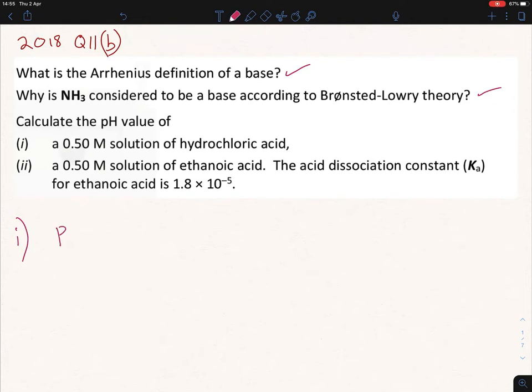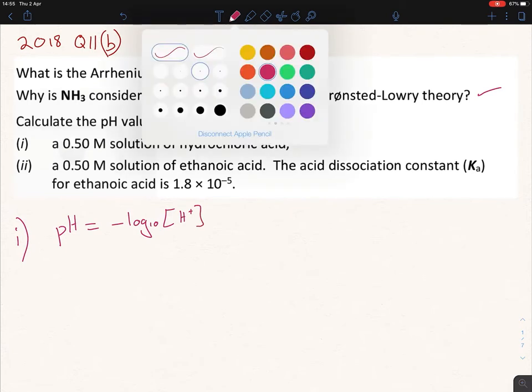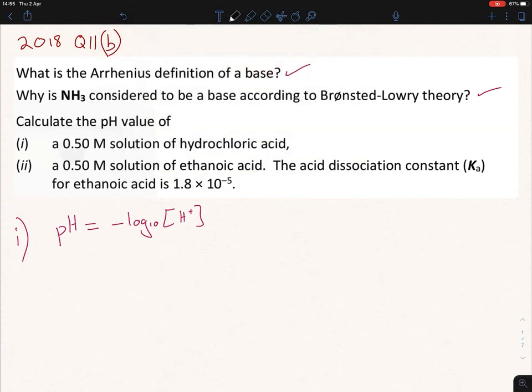So we write out our formula: pH equals minus log to the base 10, and don't forget those square brackets, H+. That's our overall formula there, you must put in those square brackets, otherwise you'll lose marks. So, we're finding the pH, so we write down pH again equals minus log to the base 10, and now we have 0.5. Those square brackets indicate molarity, which is moles per liter. Just throw it into your calculator, don't worry about square brackets in the calculator, you can just do your normal brackets for that. And as soon as you throw it into the calculator, you're going to get 0.3. And that's our answer, 0.3 for HCl.